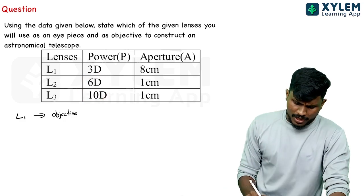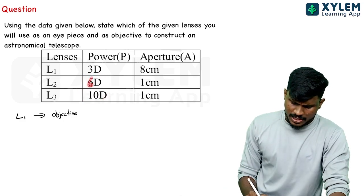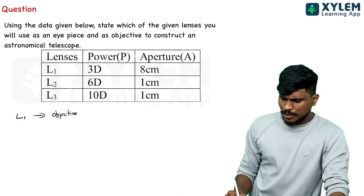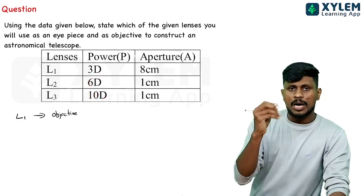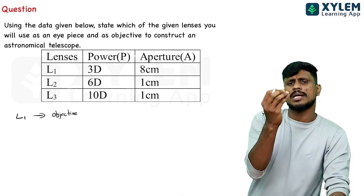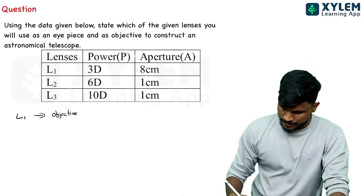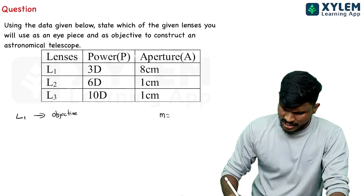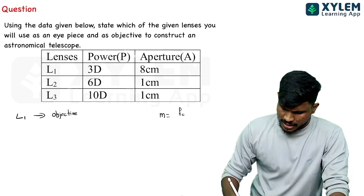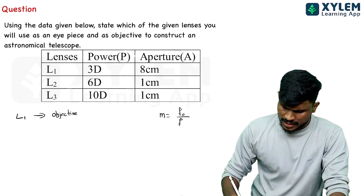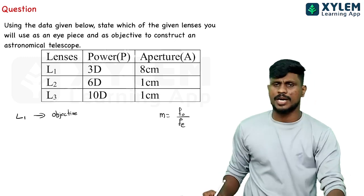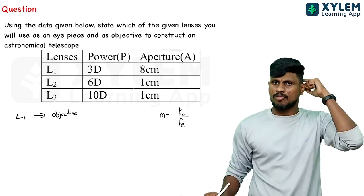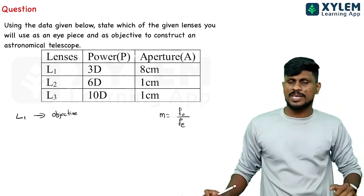Power is 6D. We have a telescope — an astronomical telescope. The magnification of an astronomical telescope is F.O. divided by F.E., that is, focal length of objective divided by focal length of eyepiece.